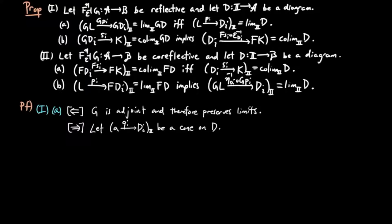Functors preserve cones, so then GQI is a cone on GD. So by the universal mapping property of GL, we have a unique factorization H from GA to GL, such that G PI H is equal to GQI for each I.